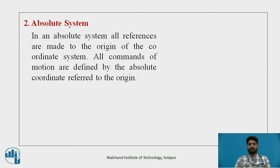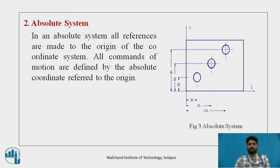Second is the absolute system. In an absolute system, all references are made to the origin of the coordinate system. All commands of motion are defined by the absolute coordinate referred to the origin. As we can see in figure 3, there is the absolute system where the reference is always made from the origin.